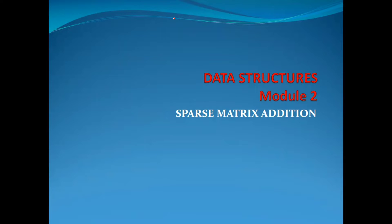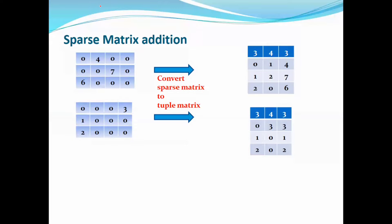First, we will discuss the sparse matrix addition. Here, we are given two sparse matrices. First of all, we have to convert the sparse matrices to tuple matrices. This is T1 and this is T2. We have to convert this sparse matrix to a tuple matrix. This is a 3 by 4 matrix, where 3 is the number of rows, 4 is the number of columns, and 3 is the number of nonzero elements.